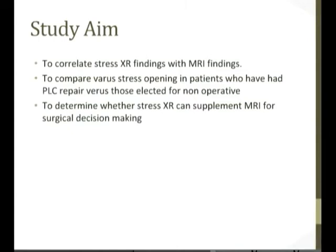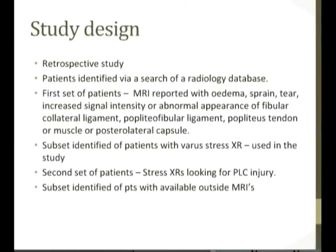The study design was retrospective. Patients were identified in two ways using a radiology database. The first method involved searching for MRI reports with edema, sprain, tear, increased signal intensity, or abnormal appearance of the fibular collateral ligament or posterolateral corner structures, then identifying a subset who also had varus stress radiographs. The second method found patients via stress radiographs alone and tracked down outside MRIs. All patients were combined for the study.